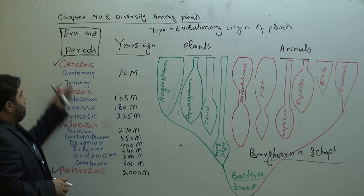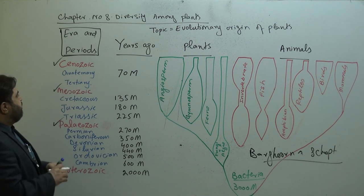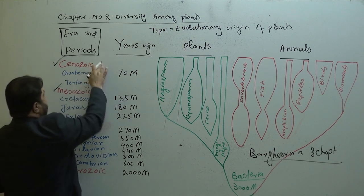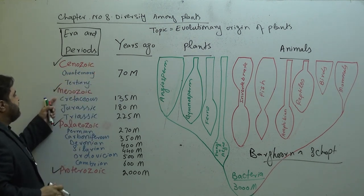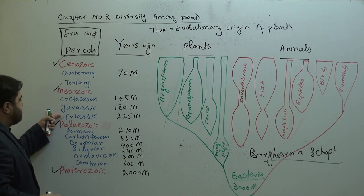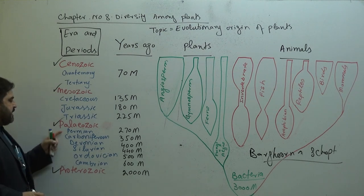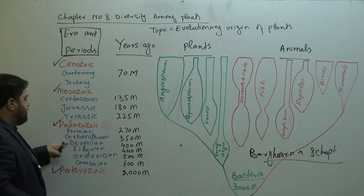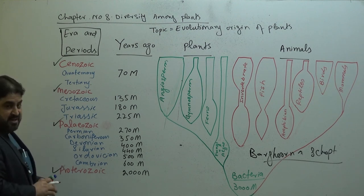Within each era there are sub-periods. In the Cenozoic, there is the Quaternary period. In the Mesozoic, there is Cretaceous, Jurassic, and Triassic. In the Paleozoic era, the sub-periods include Permian, Carboniferous, Devonian, Silurian, Ordovician, and Cambrian.